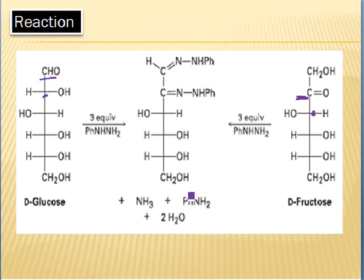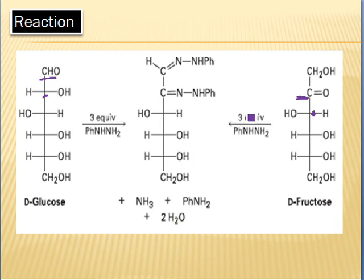The hydrazone is oxidized to form aldohydrazone, and phenyl hydrazine itself is reduced to form aniline and ammonia. Finally, a third molecule of phenyl hydrazine reacts with aldohydrazone to produce osazone. The osazone of reducing sugars is a crystalline, yellowish-orange colored, usually insoluble compound.